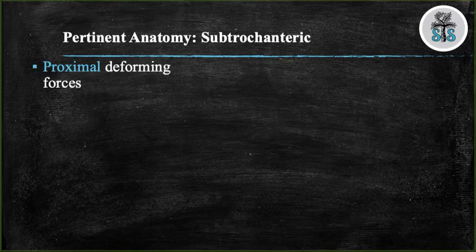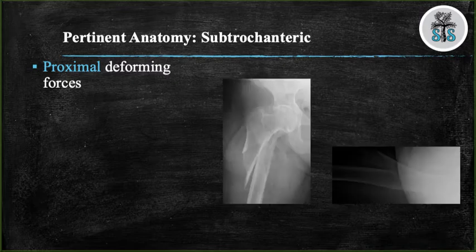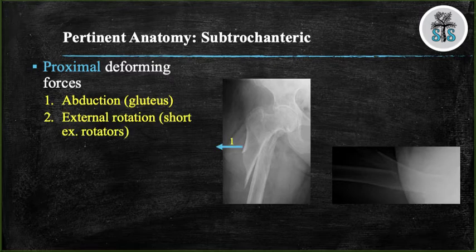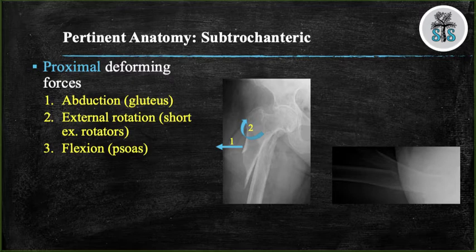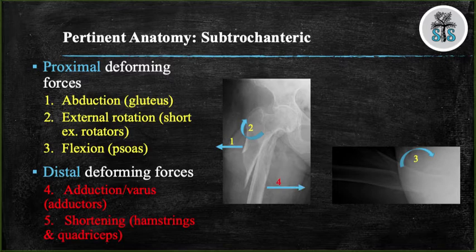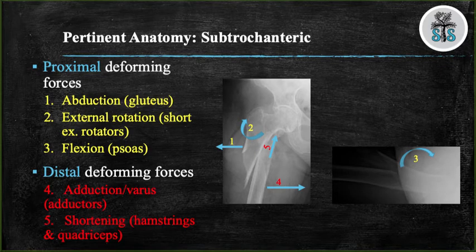You must understand the deforming forces when treating subtrochanteric fractures, as this region is encased with muscle. Breaking the fracture into a proximal and distal segment: the proximal segment is acted on in three ways — the gluteus medius and minimus cause abduction, the short external rotators cause external rotation, and the iliopsoas causes flexion. The distal fragment has two major deforming forces: the adductors cause adduction, and the hamstrings and quadriceps cause shortening. These deforming forces are key to understanding your reduction in the operating room and potential complications.